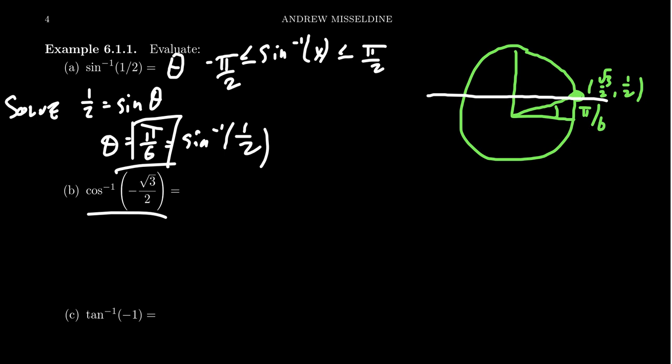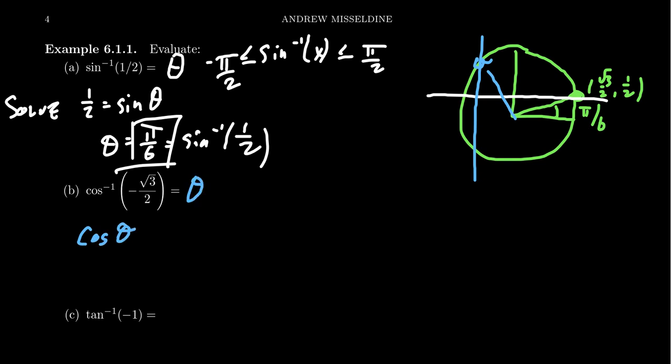Suppose we want to compute cosine inverse of negative √3/2. Thinking of our unit circle, cosine represents an x-coordinate, so we're looking at the left side of the circle. Arc cosine will only grab something in the first or second quadrant, so we're looking for the angle θ where cosine of θ equals negative √3/2, which is going to be in the second quadrant.